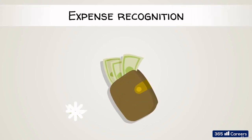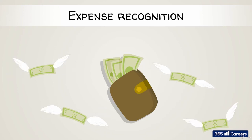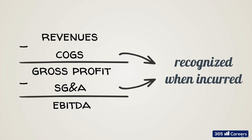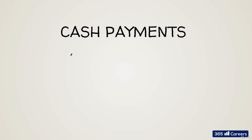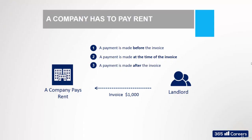Previously, we learned that getting cash and recognizing revenue are two different things. Now, we'll see a similar observation can be made for expenses. Expenses we see in the income statement are recorded during the period in which they are incurred, regardless of when the transfer of cash occurs. Similar to what we saw for revenues, cash can go out at, before, or after we recognize an expense.